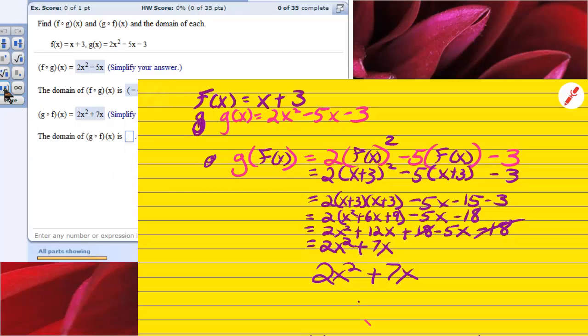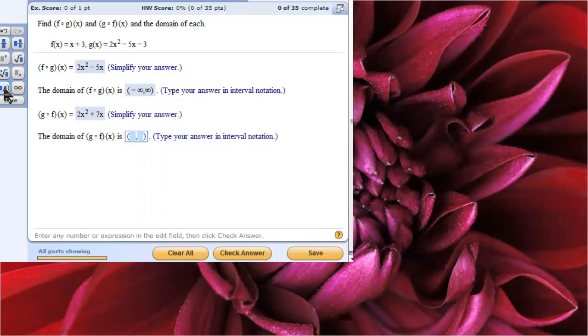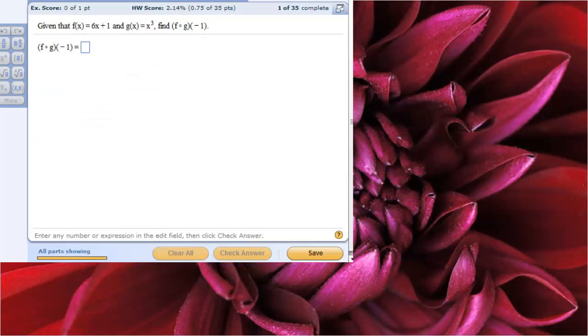And the domain, we already talked about that, is going to be negative infinity comma infinity, with parentheses because infinity never takes a bracket.